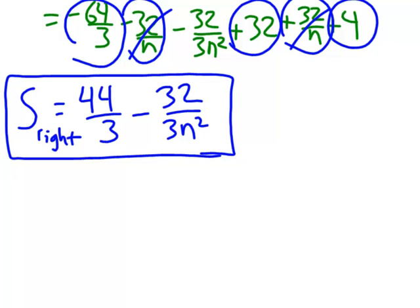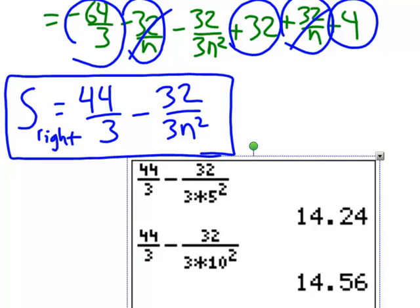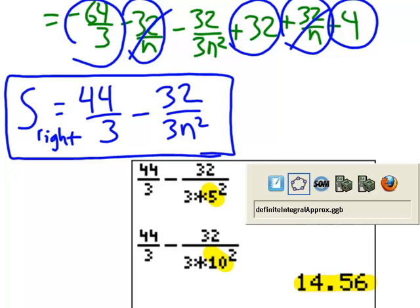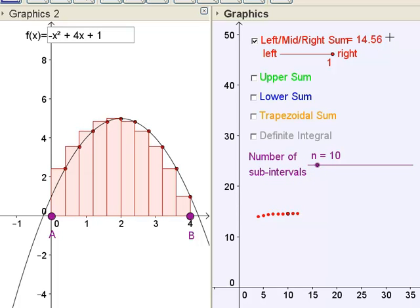To verify, let's plug in a couple values of n. For n equals 5, the formula gives 14.24, and for n equals 10, it gives 14.56. Checking against the GeoGebra model confirms that the right sum is indeed 14.24 for n equals 5 and 14.56 for n equals 10. So we verified that we did everything correctly.